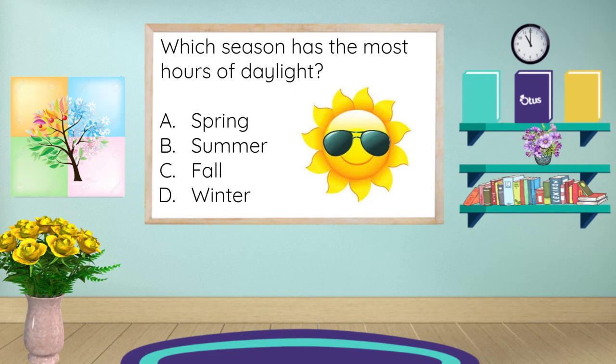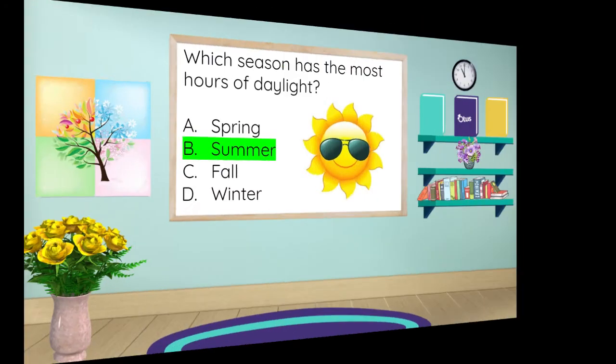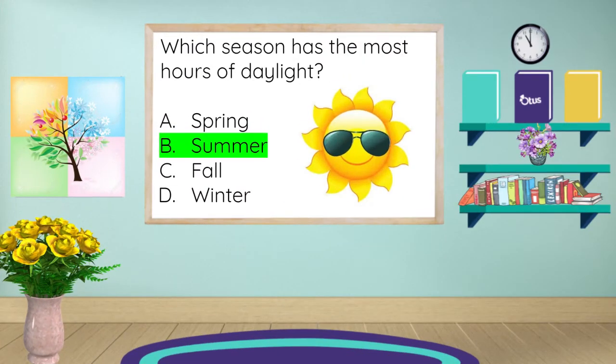Which season has the most hours of daylight? Is it A, spring; B, summer; C, fall; or D, winter? Yes, summer is the season that has the most hours of daylight. Correct again. Let's keep going, guys — you're doing fantastic.